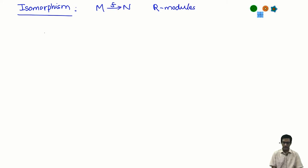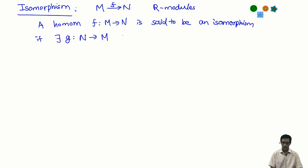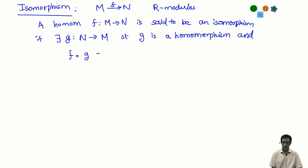A map F from M to N is said to be an isomorphism if it is, firstly, a homomorphism. A homomorphism F from M to N is said to be an isomorphism if it admits an inverse — which means there is a map G in the opposite direction. There exists G such that G is also a homomorphism, and F and G are mutual inverses: F∘G is the identity on N, and G∘F is the identity on M.